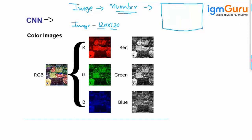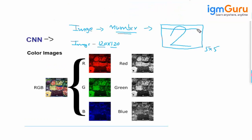For example, I have a picture representing the number two, and we are calling it a 5x5 picture. Five by five means that when we convert the picture into numbers, we will have five rows and five columns. So I'm creating the matrix — one, two, three, four — this is my 5x5 matrix, and each value is a pixel.